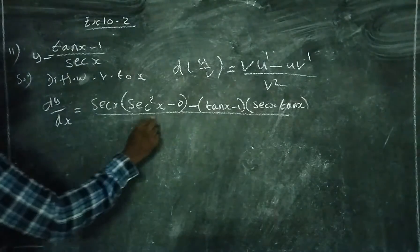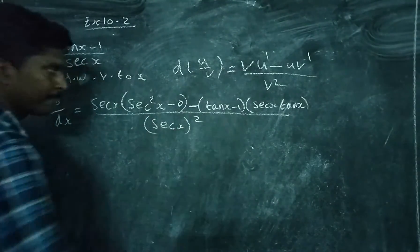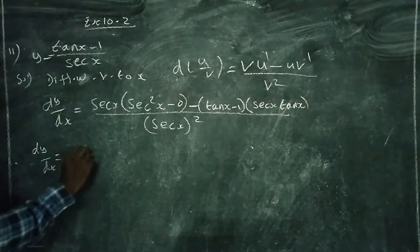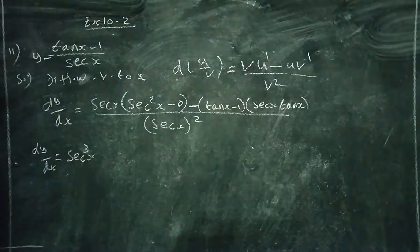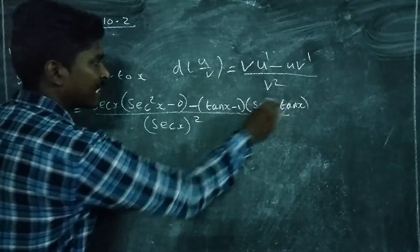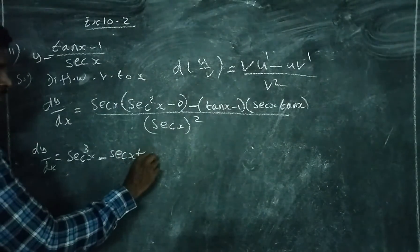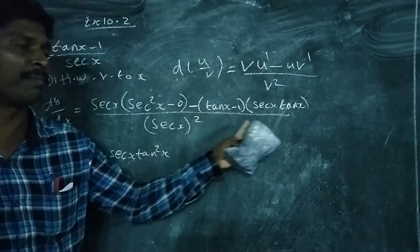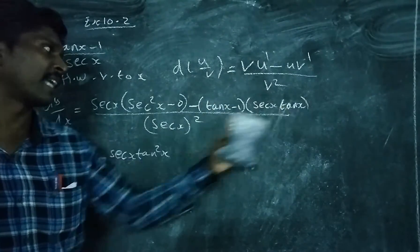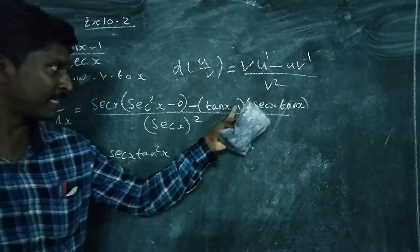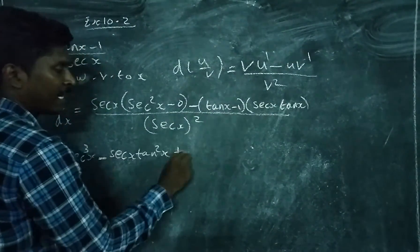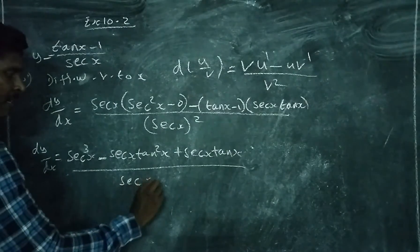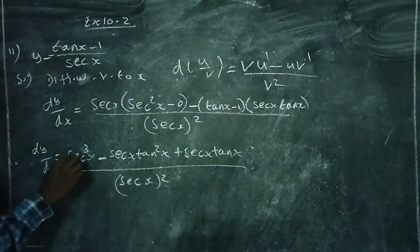The whole expression is divided by the denominator sec x squared. Now simplify: multiplying sec x into the numerator gives sec squared x. Then multiplying sec x tan x with tan x gives tan squared x, and multiplying with minus 1 gives minus sec x tan x. Adding the positive term gives plus sec x tan x.